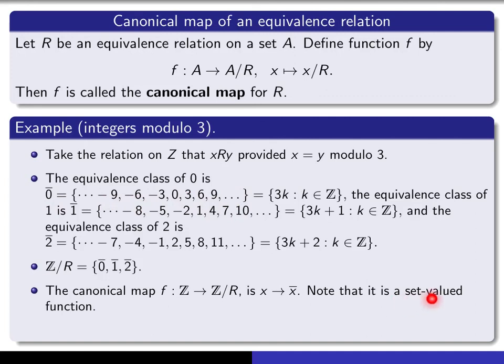So, as I said, notice that it is a set-valued function. You're going to have a look at these canonical mappings a great deal when you do your abstract algebra class. At GMU, that's Math 321, and the graduate version of that is Math 621.